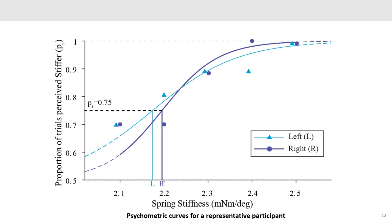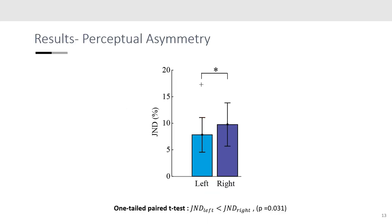Psychometric curves were plotted for all participants and the JND was set at a proportion correct percentage of 75%. We found that the participants demonstrated significantly lower JNDs when exploring with their left hand.